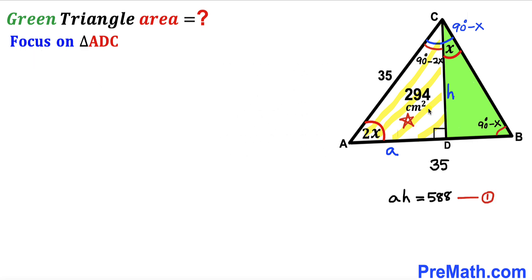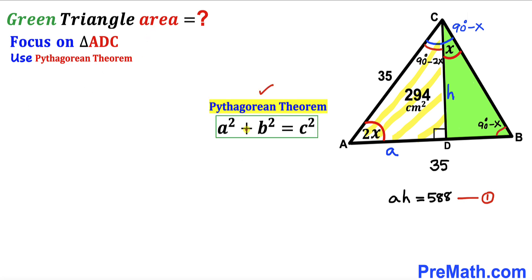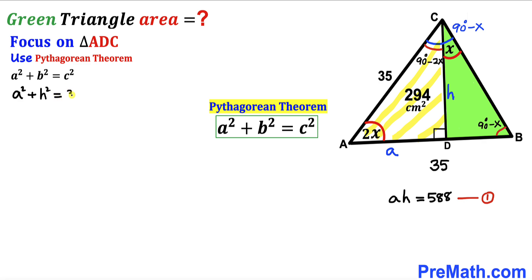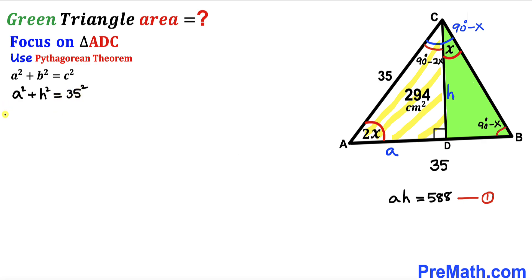Now applying the Pythagorean theorem to triangle ADC: a² + b² = c². Our hypotenuse is 35 and the two legs are a and h. So we get a² + h² = 35² = 1225. Let's call this equation number two.